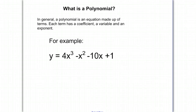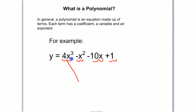For example, on the board here we have a polynomial. Each term I'll circle — so this is a term, this is a term, negative 10x is a term, and 1 is a term — all separated by a plus or minus sign. So each of these are terms.